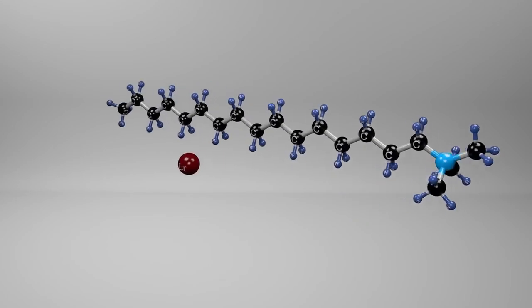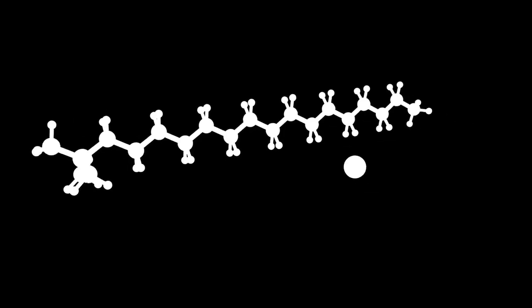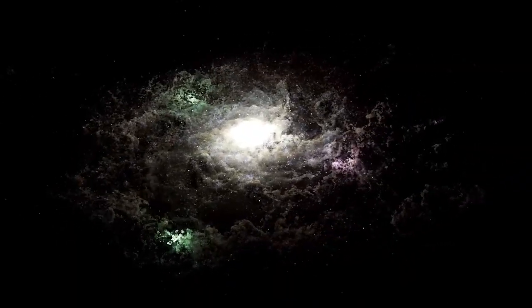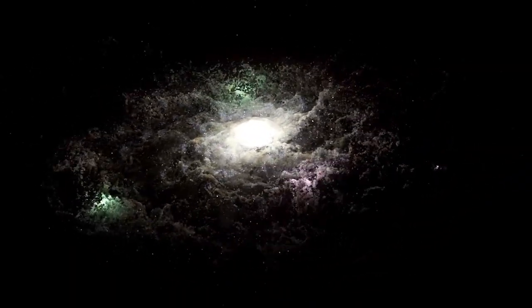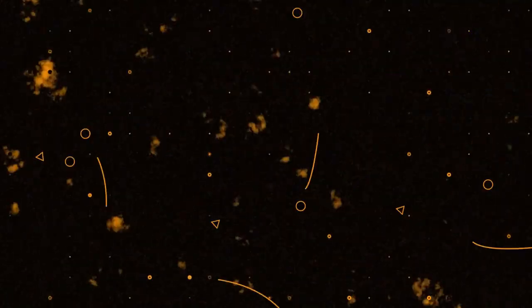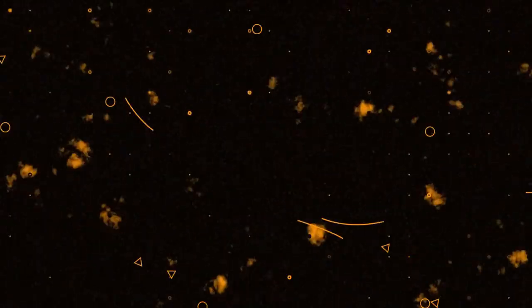Binding the universe together are cosmic filaments, enormous threads of gas, dust, and dark matter that stretch across billions of light-years. These filaments form a web-like structure that links galaxies and clusters into an intricate cosmic network. The universe's matter is not evenly distributed. Instead, it forms this delicate web of filaments and nodes, where gravity gathers galaxies together.